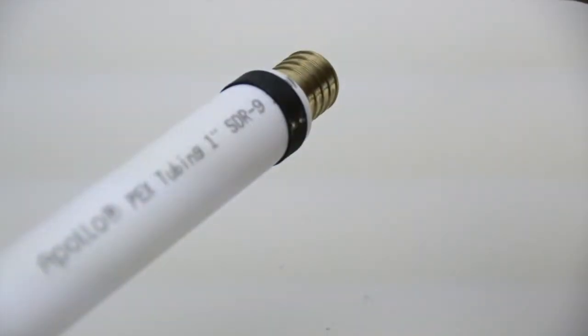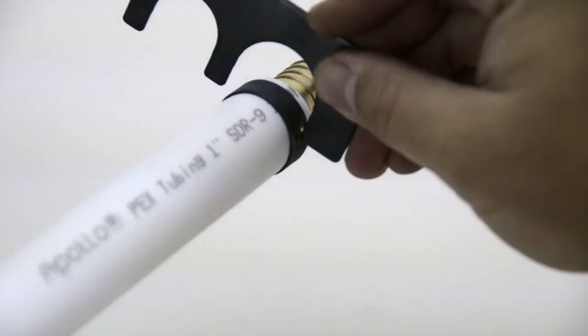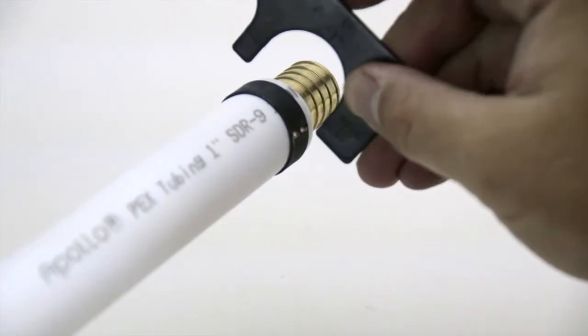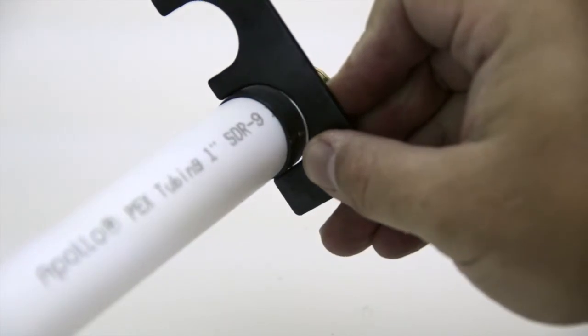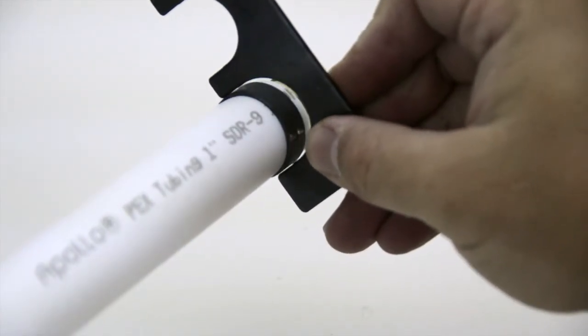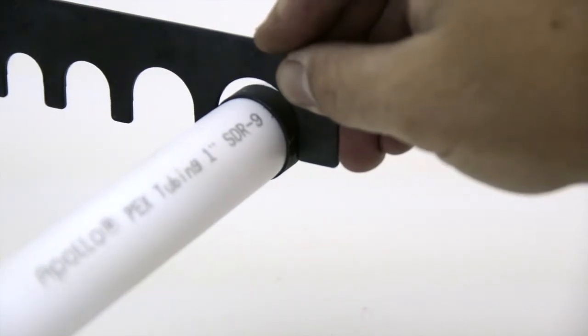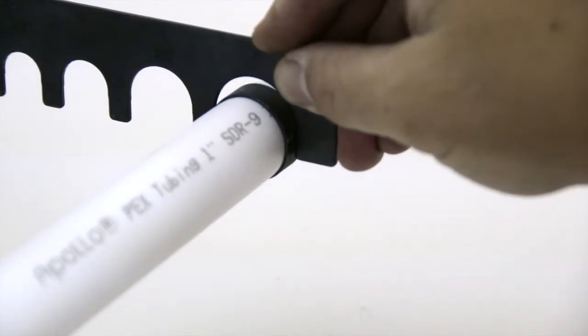Included with the tool is a go-no-go gauge which can be used to confirm a secure connection. Place the go-no-go gauge such that the edges of the gauge touch the indentations on the crimp left by the pressing action of the tool. If the go-no-go gauge rests halfway, the connection is secured.